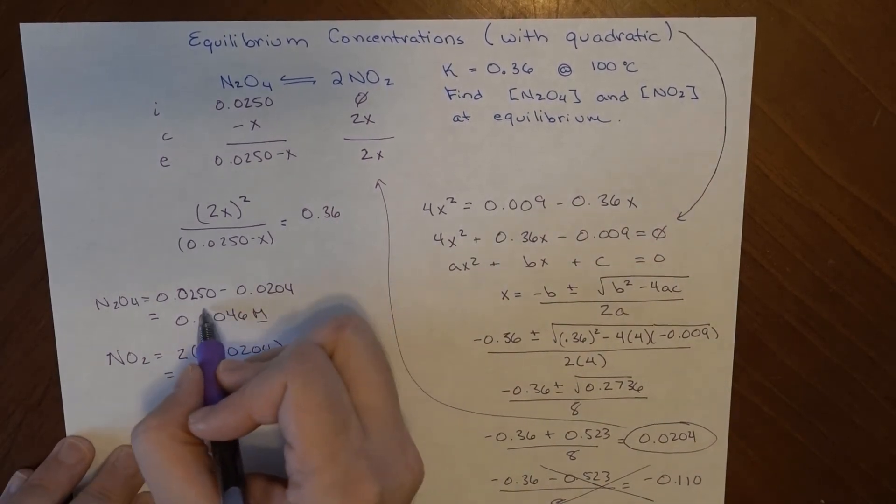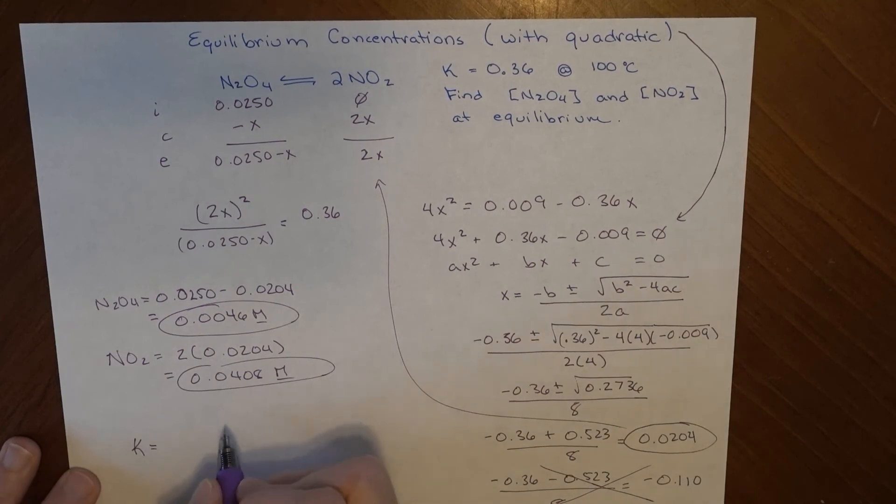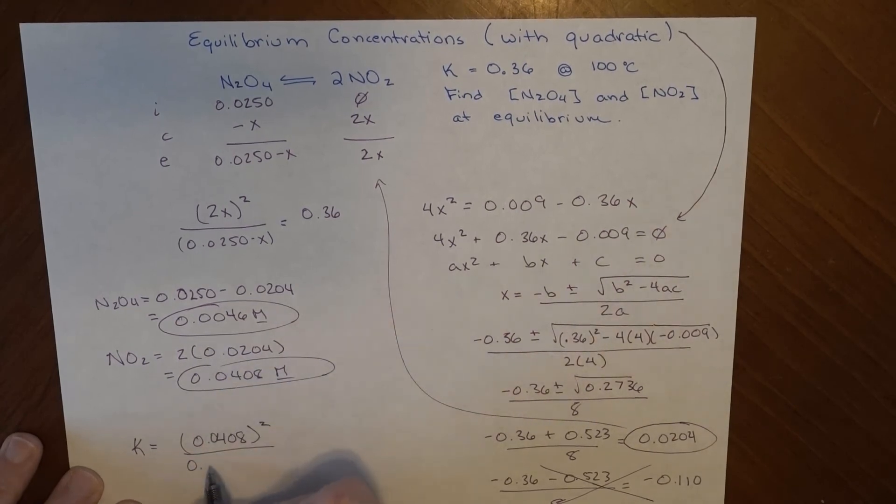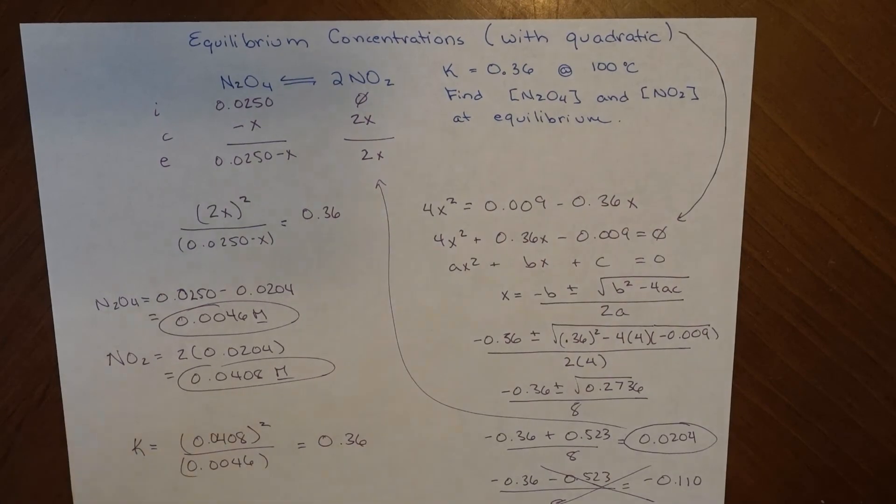So those are my equilibrium concentrations. Did I do this right? Well, the easiest way for me to know is to plug this into my K expression. So my concentration of NO2 at equilibrium is 0.0408, and that number is squared, divided by my equilibrium concentration of this, which is not squared. And when I do that, that comes out to 0.36. So I'm reasonably confident that I did this correctly.